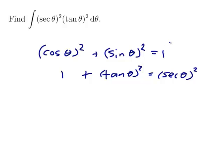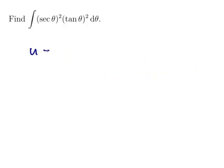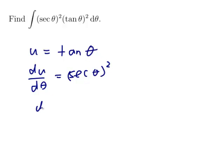Okay, well, I'll rub that out. I should be saying that u is equal to tan theta, and then du on d theta is sec theta squared, so du is sec theta squared d theta.